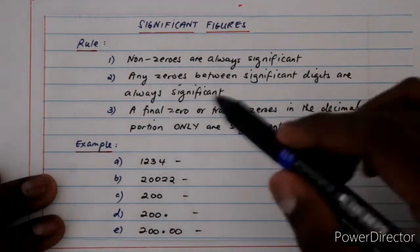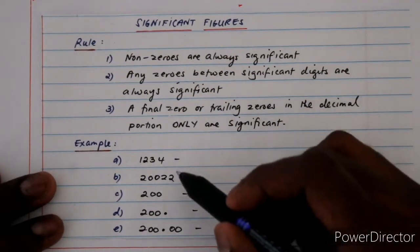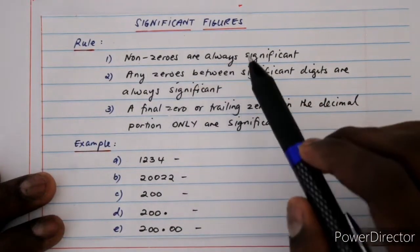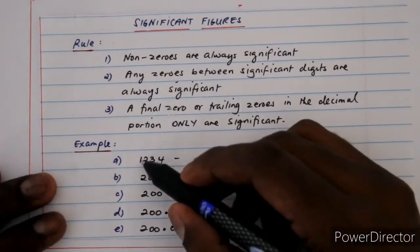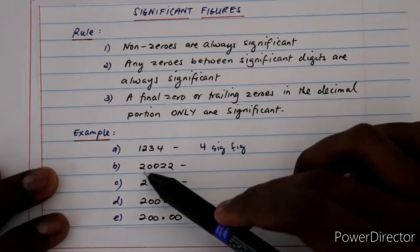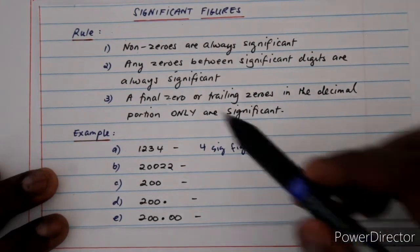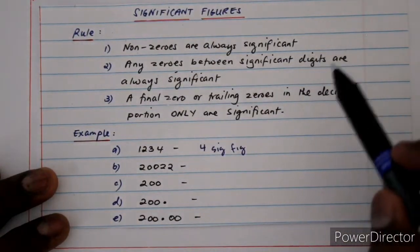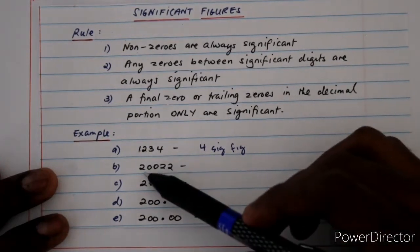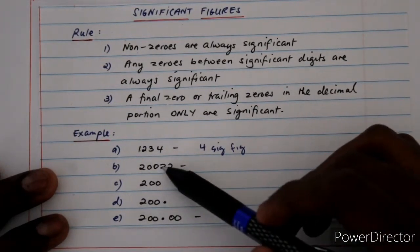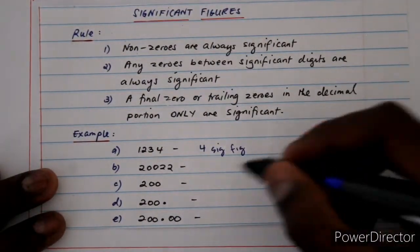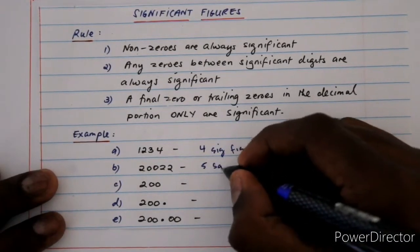The third rule can be a little confusing — we'll clarify it with examples. First example: 1234. By Rule 1, all non-zero digits are significant, so we have four significant figures. Next example: 2022. The significant digits are 2, 2, and 2. The two zeros are between significant digits, so by Rule 2 they are also significant. That gives us five significant figures in total.